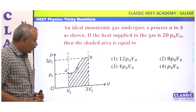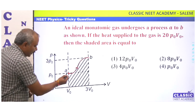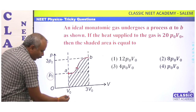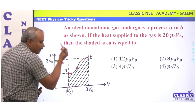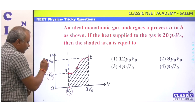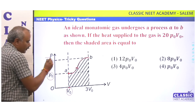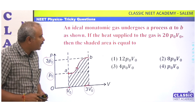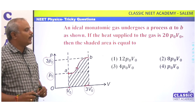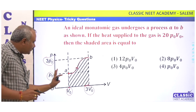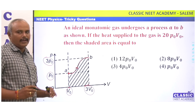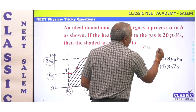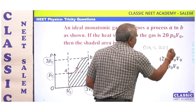The PV diagram is shown in the figure. Initially, at point A, P0 is the pressure and V0 is the volume. At point B, the pressure is 3P0 and the volume is 3V0. The heat supplied to the gas in this process, ΔQ, is 20P0V0.